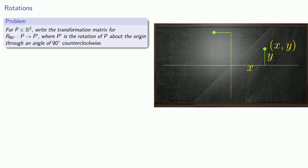The lengths themselves have remained unchanged. But this time, our horizontal distance will be negative y, and our vertical distance will be x, so our coordinates will be (negative y, x).